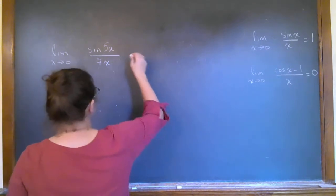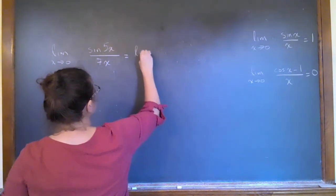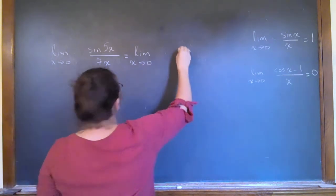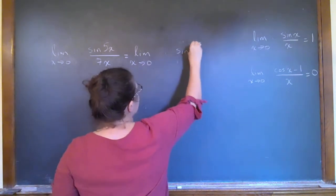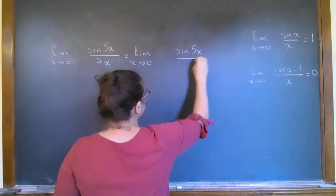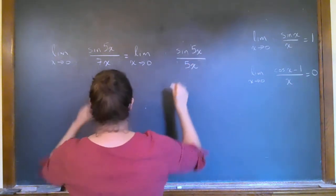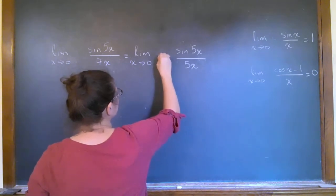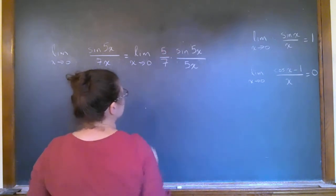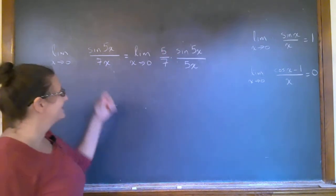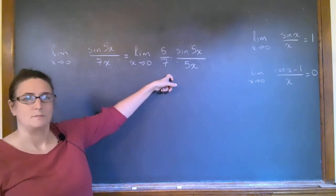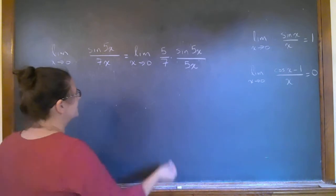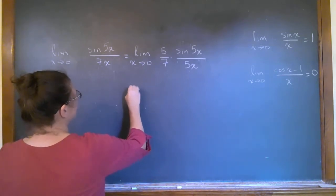Multiplying top and bottom by 5. So let me show you what I mean. If I have sine of 5x and instead of having a 7x I want a 5x, well I pull a 7 here and a 5 there. These are the same. Now this 5/5x goes out of the thing.